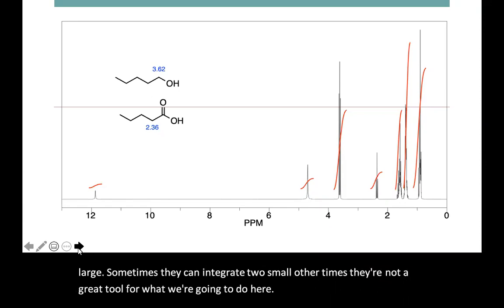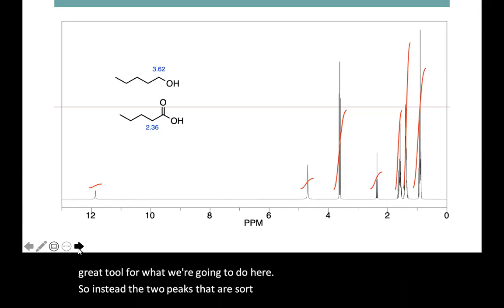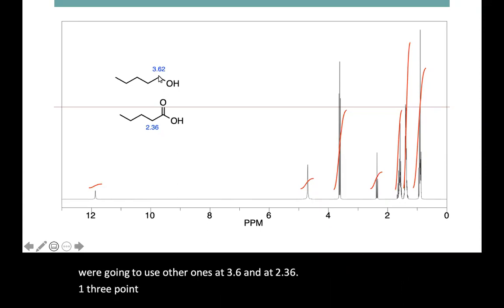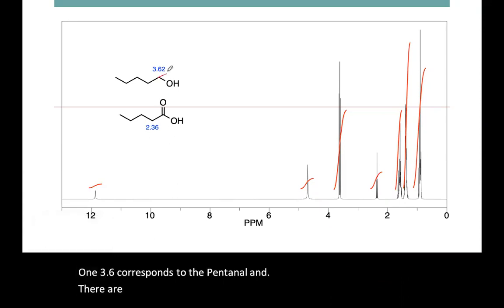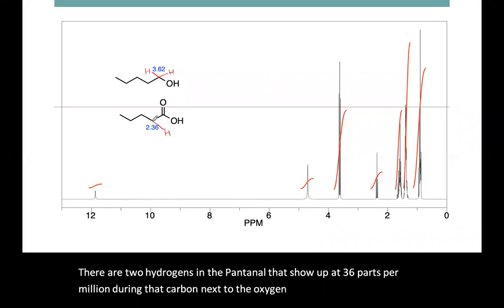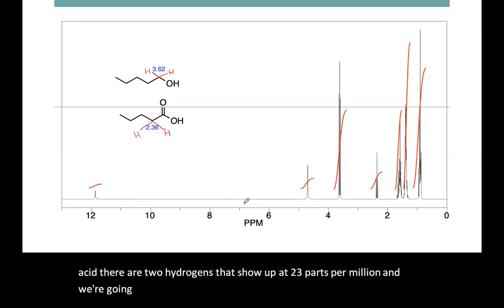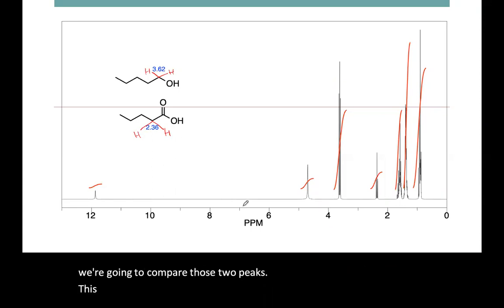So instead, the two peaks that are sort of isolated from the others that we're going to use are the ones at 3.6 and at 2.36 ppm. The 3.6 corresponds to the pentanol — there are two hydrogens in the pentanol that show up at 3.6 parts per million on that carbon next to the oxygen — whereas in the pentanoic acid there are two hydrogens that show up at 2.3 parts per million. We're going to compare those two peaks just to get a ratio of these two compounds to each other.